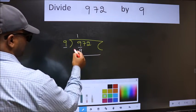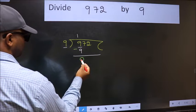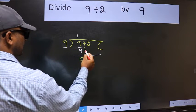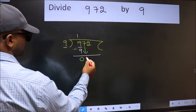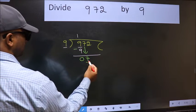Now we should subtract, we get 0. After this, bring down the beside number, so 7 down. Now here we have 7 and here 9.